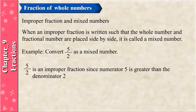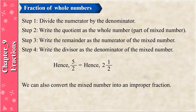Improper Fraction and Mixed Numbers: When an improper fraction is written such that the whole number and fractional part are placed side by side, it is called a mixed number. Example: Convert 5/2 as a mixed number. Since numerator 5 is greater than denominator 2, it is an improper fraction. Step 1: Divide the numerator by the denominator. Step 2: Write the quotient as the whole number part. Step 3: Write the remainder as the numerator. Step 4: Write the divisor as the denominator. Hence, 5/2 = 2 and 1/2.